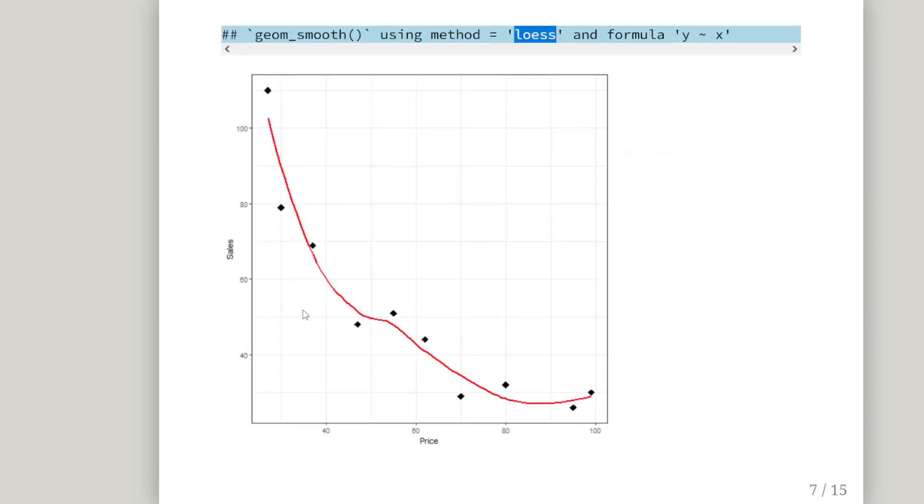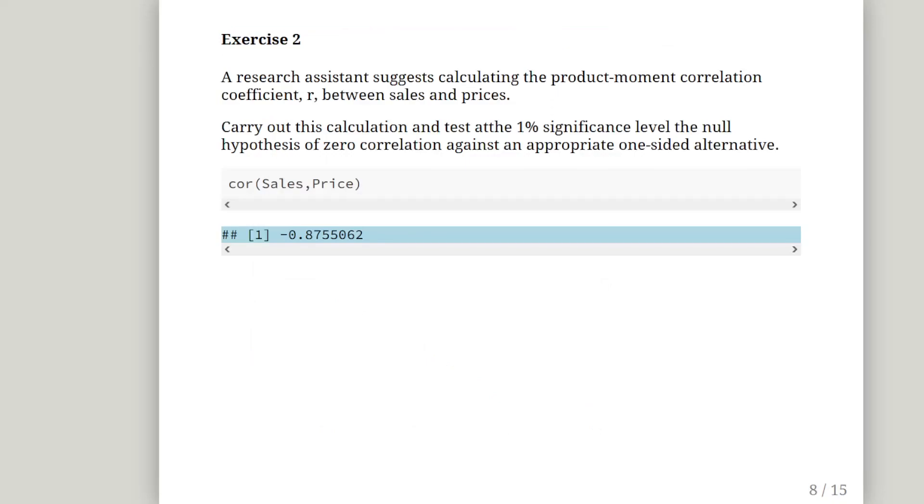So that is our plot. So we reckon there is a sort of negative relationship between price and sales. Well, it is not exactly linear, but it seems to have some sort of quadratic curvature relationship, or non-linear curvature relationship. So exercise two, we are asked to calculate the correlation coefficient. So a research assistant suggests calculating the product moment correlation coefficient, the Pearson correlation coefficient, between sales and prices. Carry out this calculation and test at the 1% significance level the null hypothesis of zero correlation against an appropriate one-sided alternative.